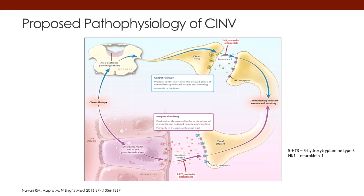Looking at the right side, you can see the central pathway, where you have substance P being released, and that substance P will activate the neurokinin receptor. That neurokinin receptor, centrally in the brain, can also activate the vomiting center causing a person to vomit. The peripheral serotonin pathway is more associated with acute vomiting, while the centrally mediated substance P, or the neurokinin receptor, is more responsible for delayed vomiting, which we often see with chemotherapy administration.